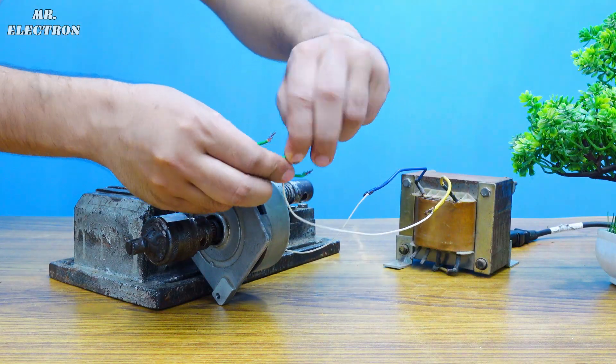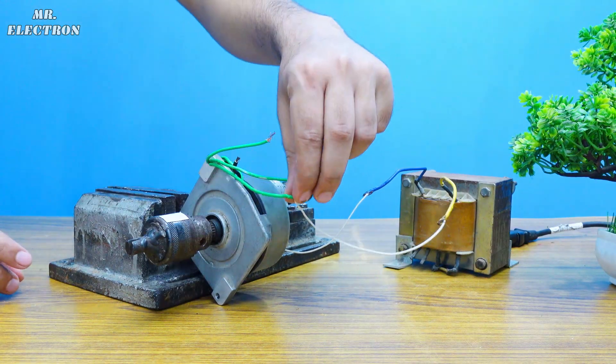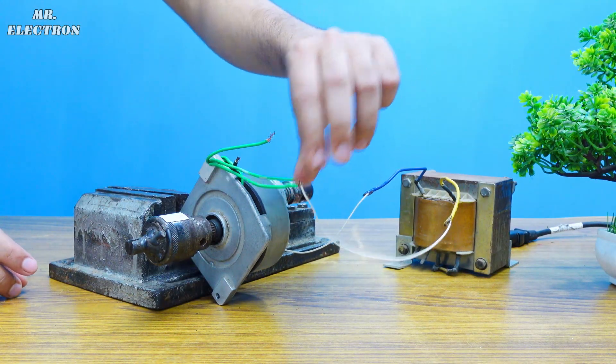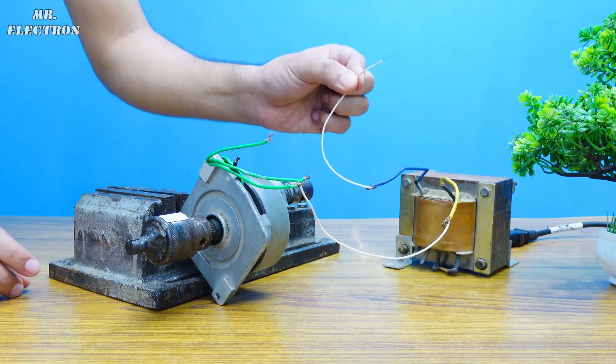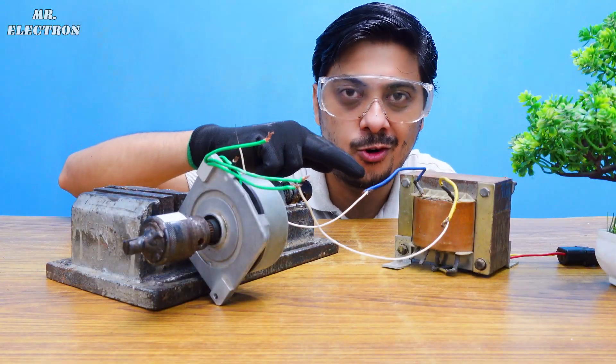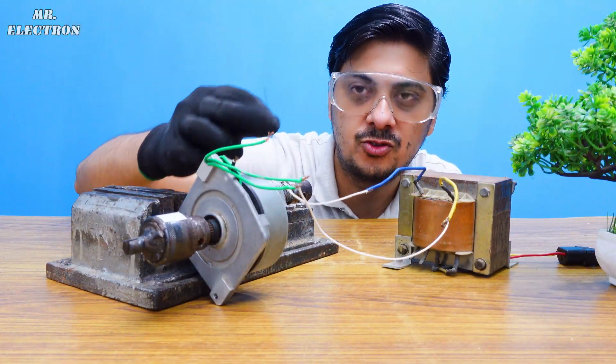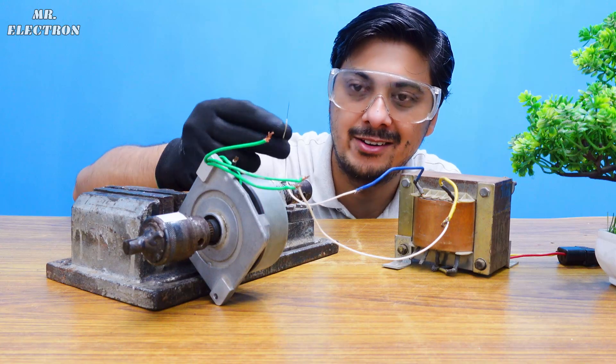We have to connect only two, so one is already connected, the other one is left. Now the transformer is on and all I need to do is connect this wire to one of the two remaining wires and see what happens.